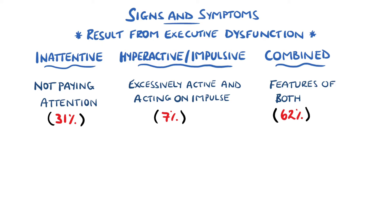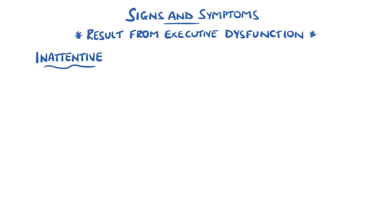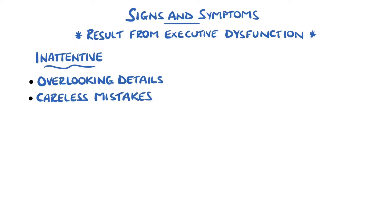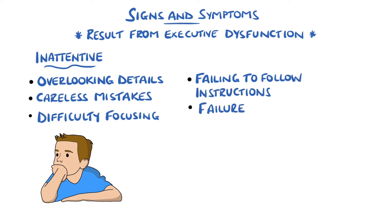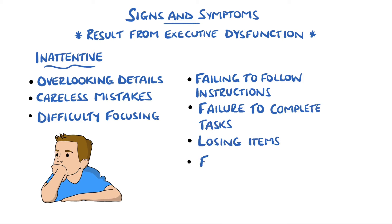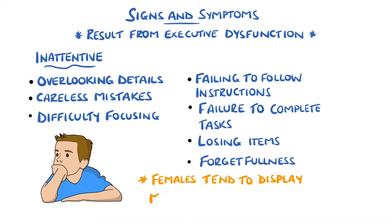Inattentive examples could be often overlooking details or making careless mistakes, difficulty maintaining focus on tasks or during conversation, even when there's no obvious distraction. Others include failing to follow instructions, complete tasks, organise tasks, losing items and forgetfulness. Females tend to display more symptoms of inattention and distractibility than hyperactivity and impulsivity.